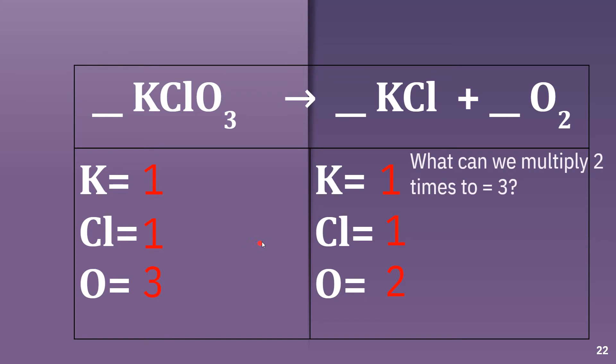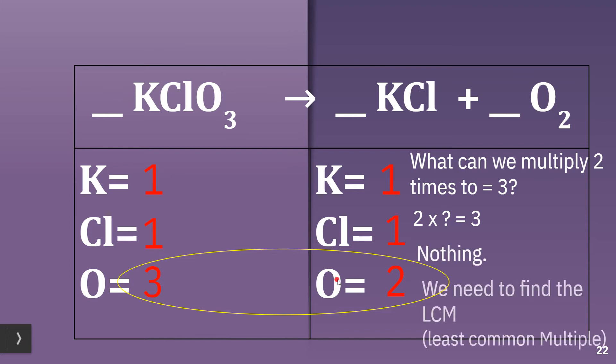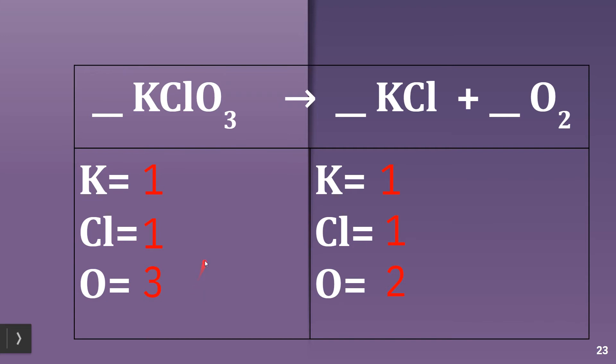So what can we multiply 2 times to get 3? 2 times what equals 3? Well, nothing. We can't multiply 2 times just to get 3. So we need to find the least common multiple of 2 and 3. The least common multiple of 2 and 3 is 6. So we need to multiply 3 times 2 and 2 times 3. That'll get it, so we have 6 on both sides of the equation.